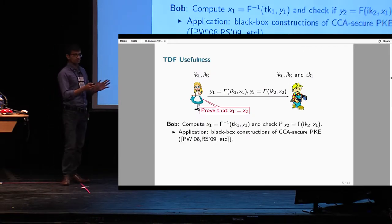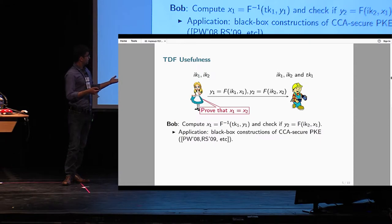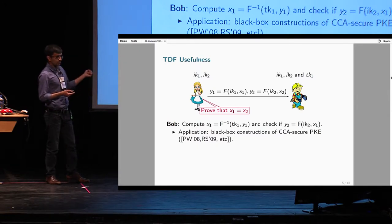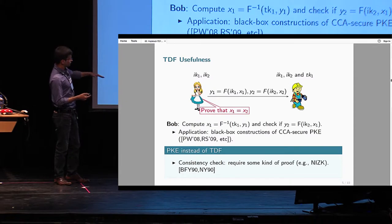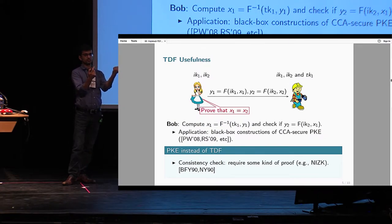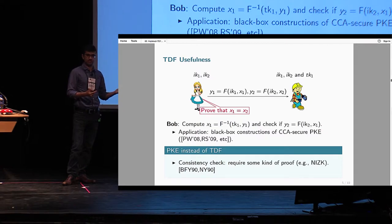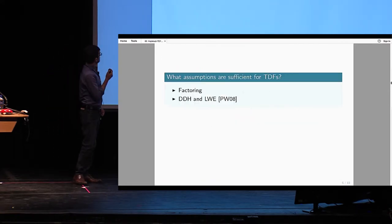Since trapdoor functions use no randomness, this is easy for Bob to check himself. Bob can use his knowledge of tk1 to recover x1 and then check whether f(ik2, x1) gives y2 or not. This is not a toy example — it is the main reason behind the success of building CCA-secure public encryption schemes in a black box way from various forms of trapdoor functions. In contrast, with public encryption this is difficult, because in general it is hard to check whether two ciphertexts encrypt the same plaintext — you need non-interactive zero-knowledge tools, which make the protocol non-black-box and inefficient.